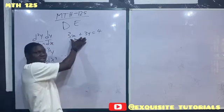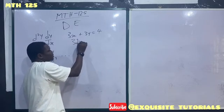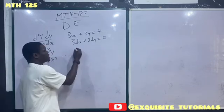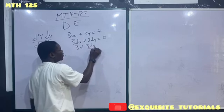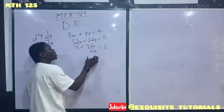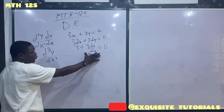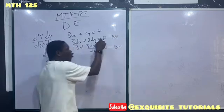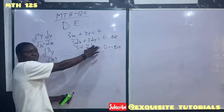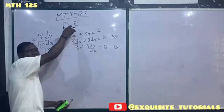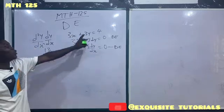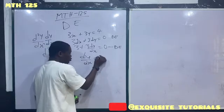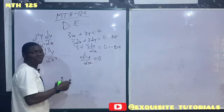But if I differentiate this equation, I'll have 3dx plus 3dy equals to 0, such that if I divide by dx, I'll have 3 plus 3 dy over dx equals to 0. Because I have a differential coefficient in this equation, I'll say this is a differential equation. Once you can find any differential coefficient in any equation, it becomes a differential equation — even if it's just dy over dx equals to 0.